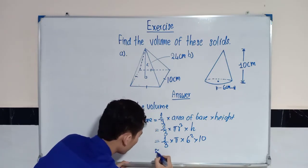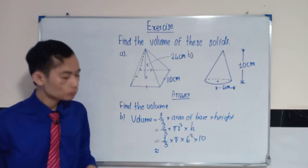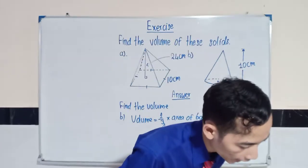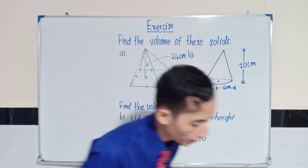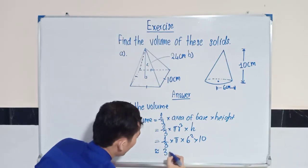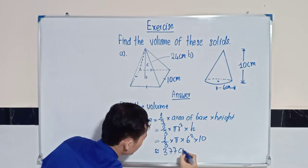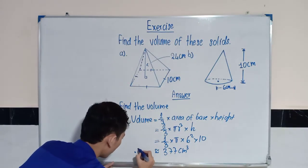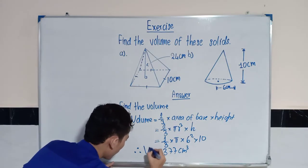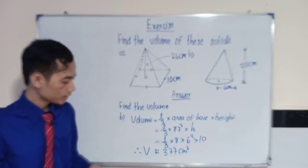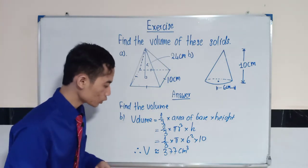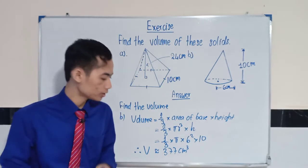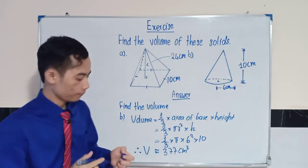Then we can multiply them together. Next we get 377 centimeter cube. Therefore, volume is approximately equal to 377 centimeter cube. Finish.